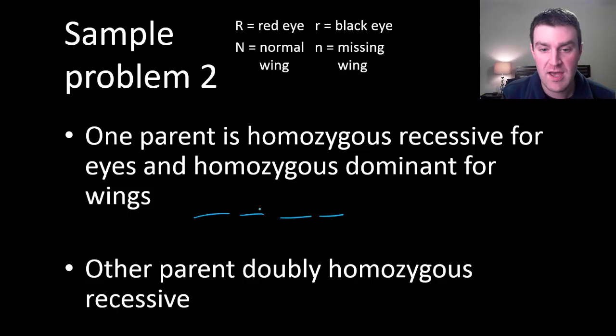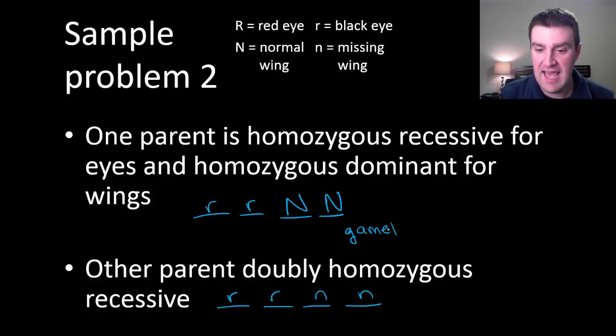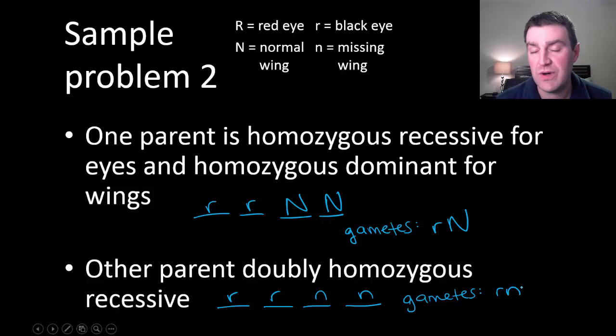Let's say that one parent's homozygous recessive for eyes and homozygous dominant for wings. So four letters. Homozygous recessive for eyes means both little r's. Homozygous dominant means both uppercase N's for wings. Let's say that this parent is doubly homozygous recessive. So that means that they're a lowercase for both genes. Let's think about what gametes they can make. You need half of what you start with and one of each letter. I need an R and an N in each one of my gametes. So this parent can only pass on little r little n. As it turns out this parent can only pass on little r little n. So each one of them can only make one gamete.